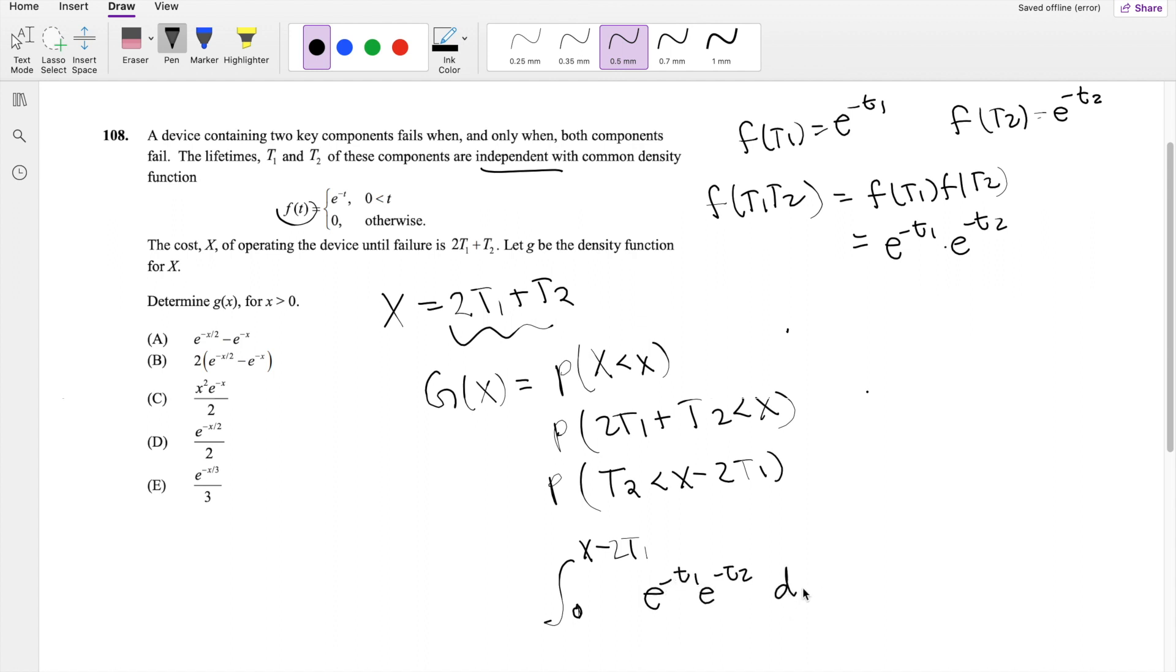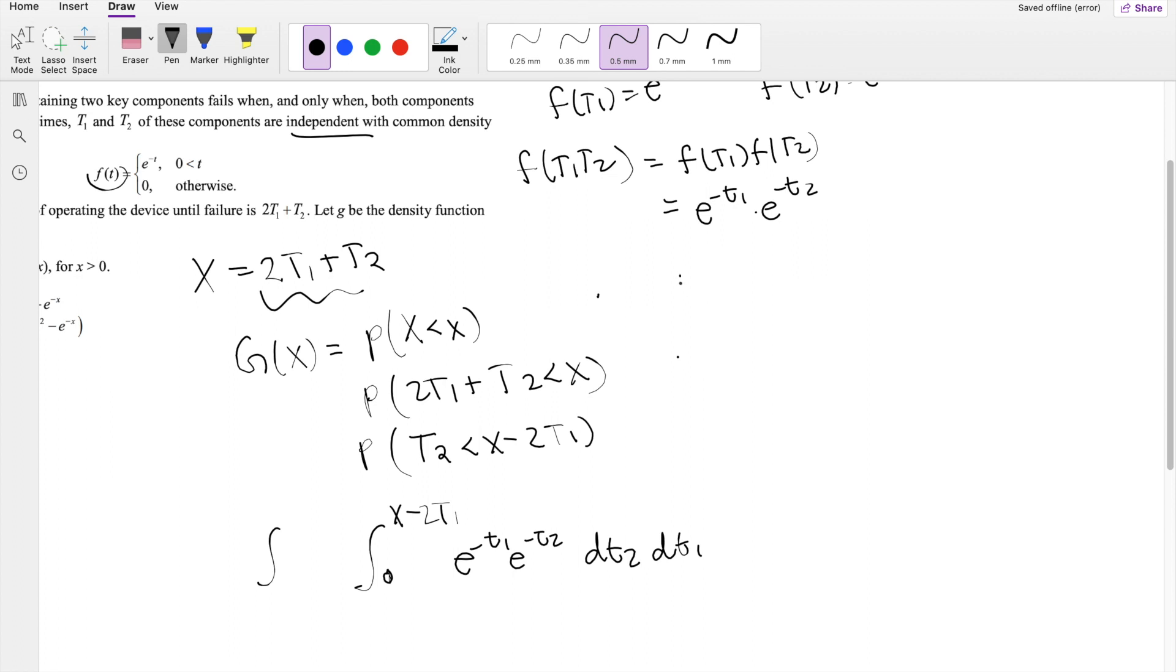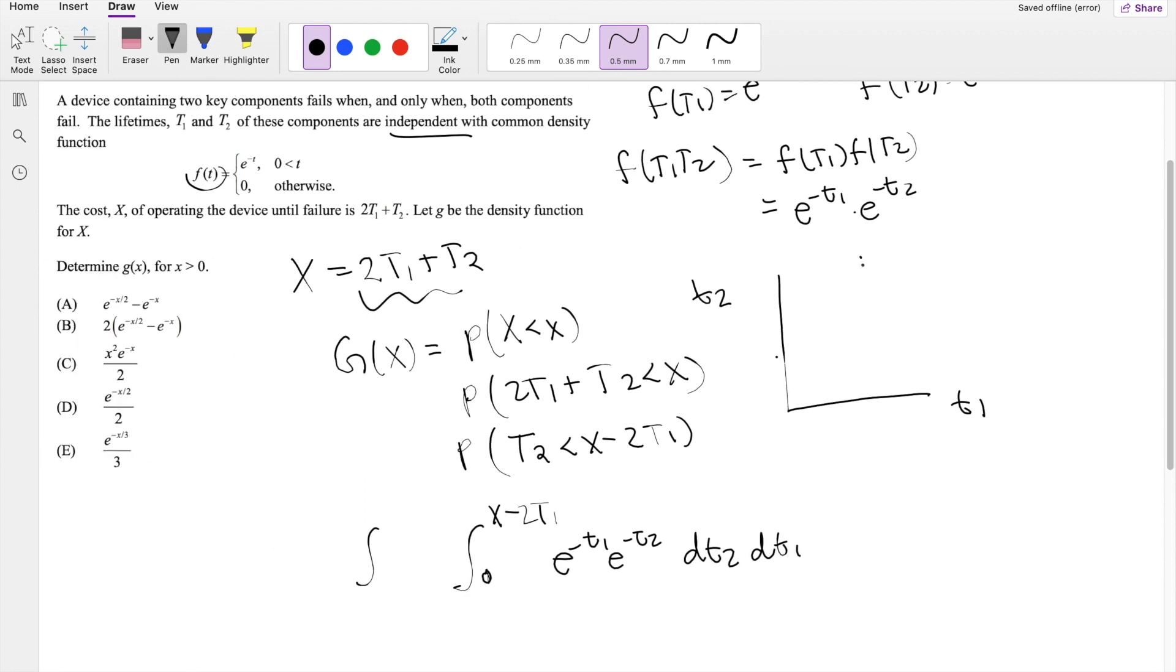And we're integrating with respect to dt2 first. And so what range does dt1 exist on? This is a little bit trickier. I'm actually going to graph this to figure out the range. So this is t1, and I'm going to let this be t2. The function here is x is equal to, so this is essentially t2 is equal to x minus 2t1. x, we don't know what it is, but it's an intercept, it's just a constant here, minus 2t1, so that slope is going at a negative 2. At this point here, this value is when t2 is equal to 0, so then t1 must be equal to x over 2. So this point right here is x over 2, 0.